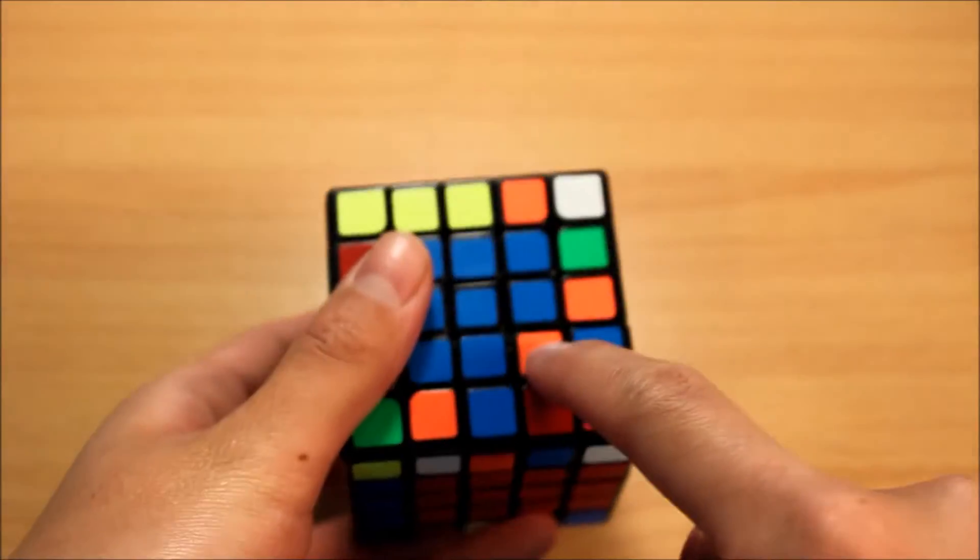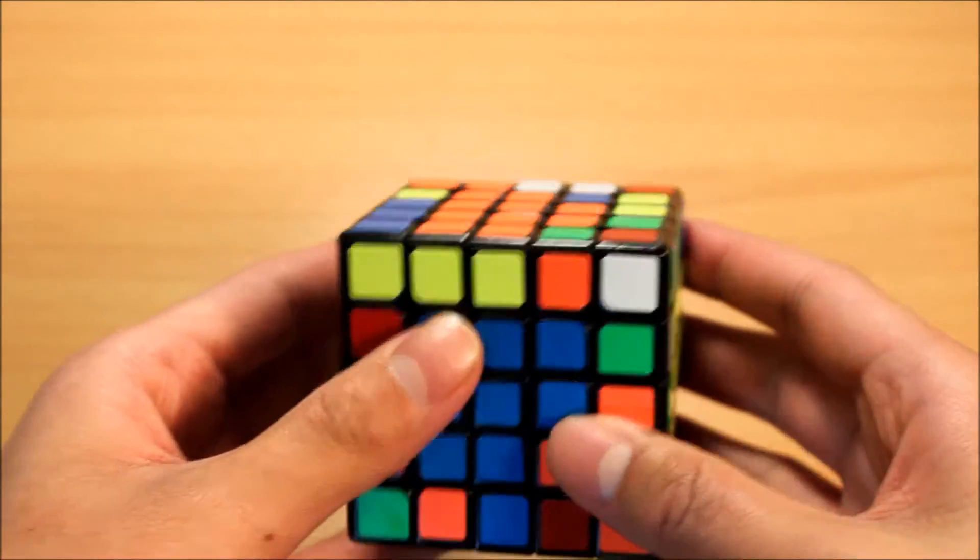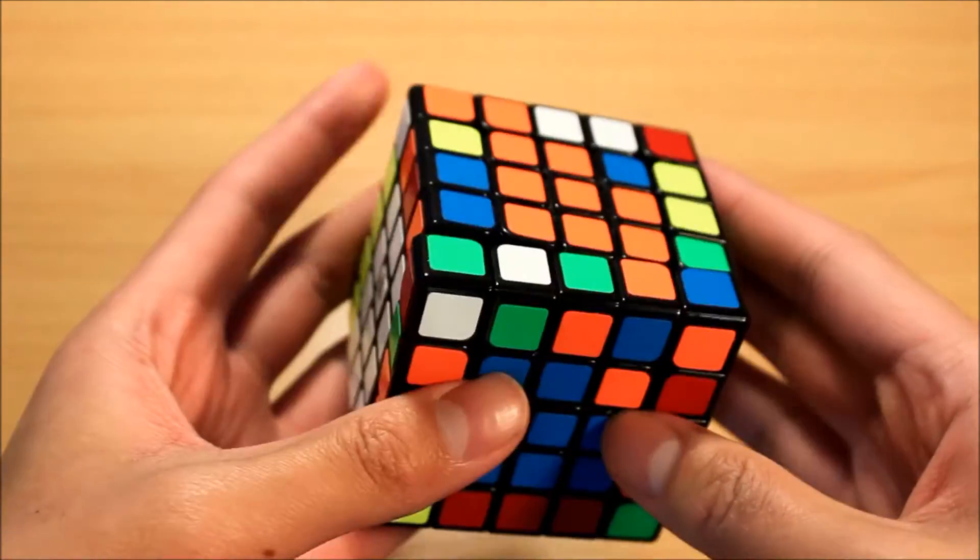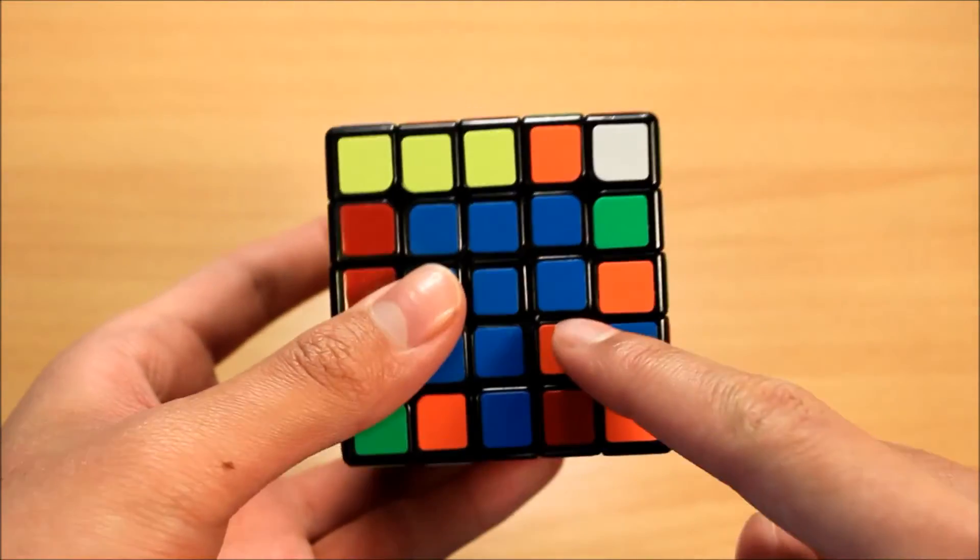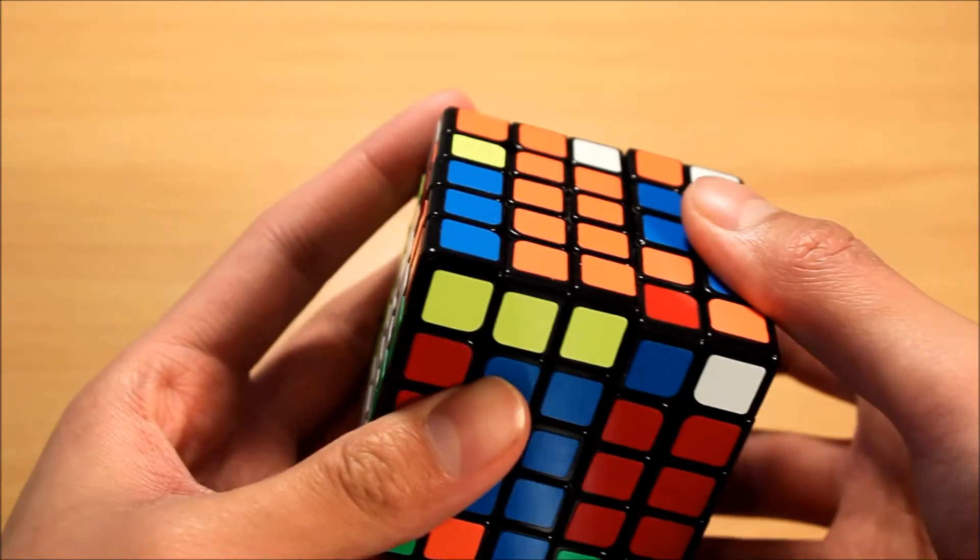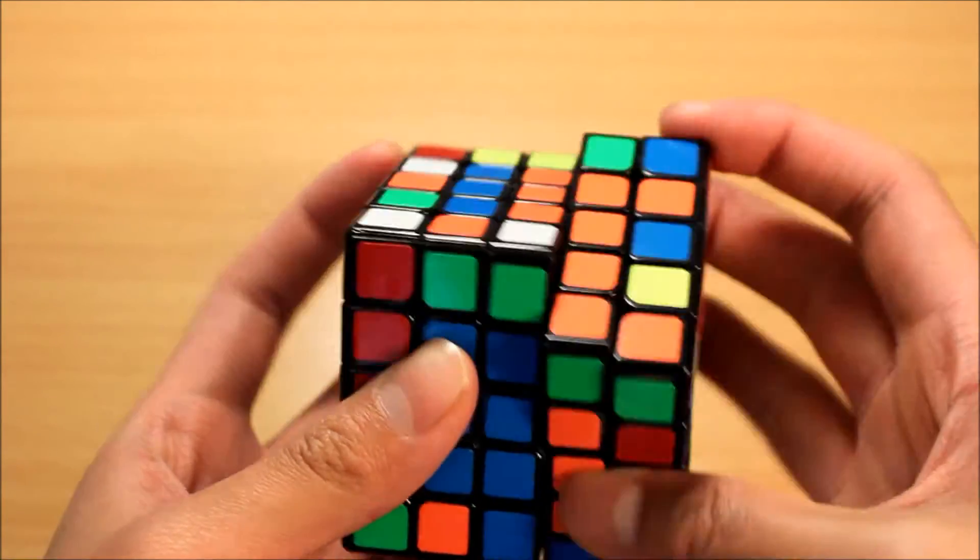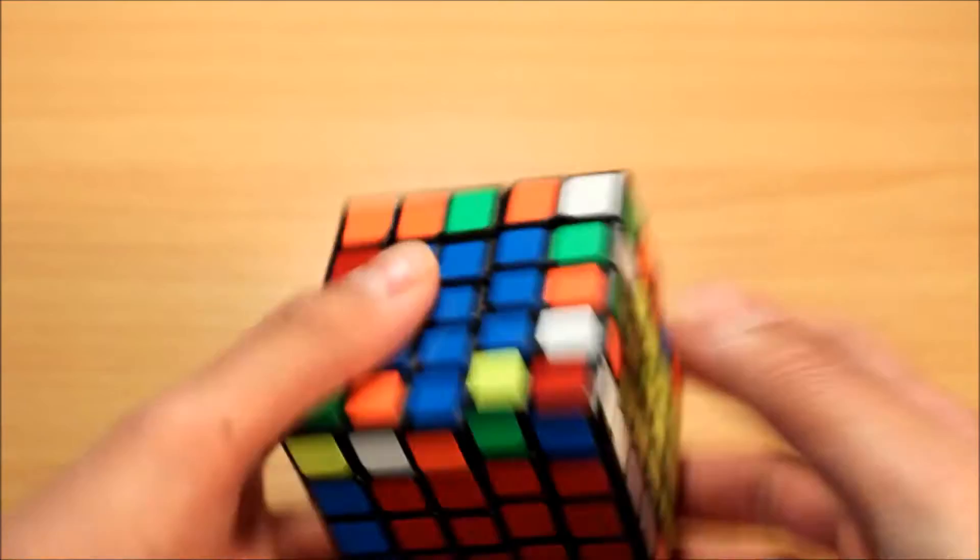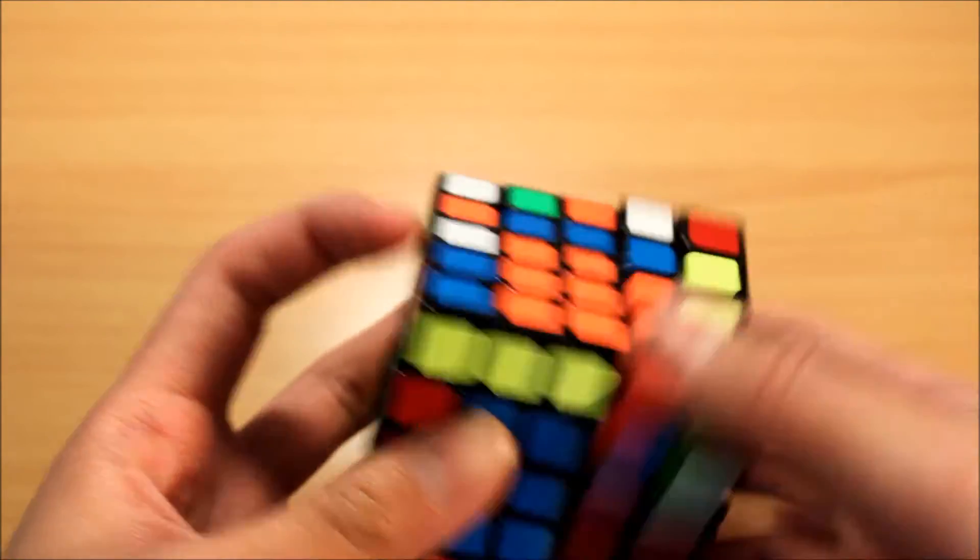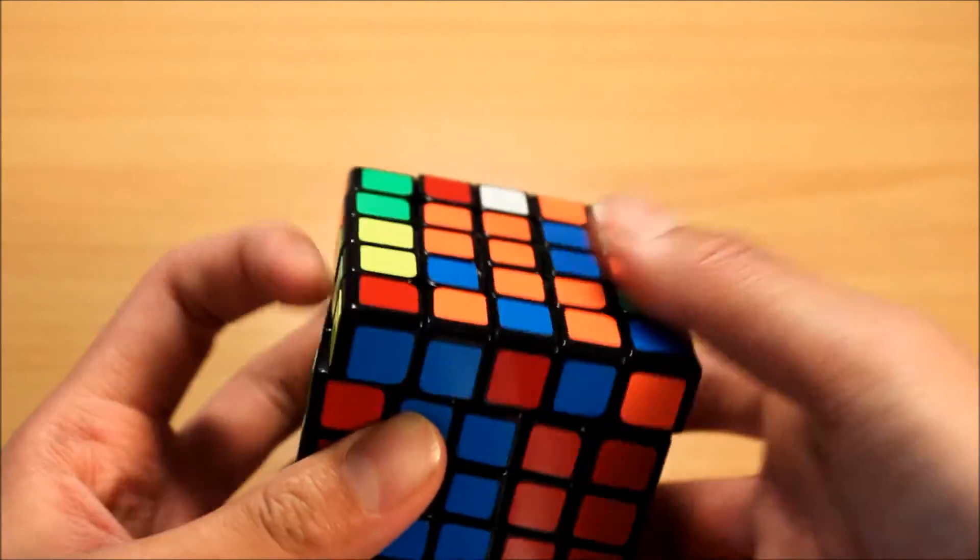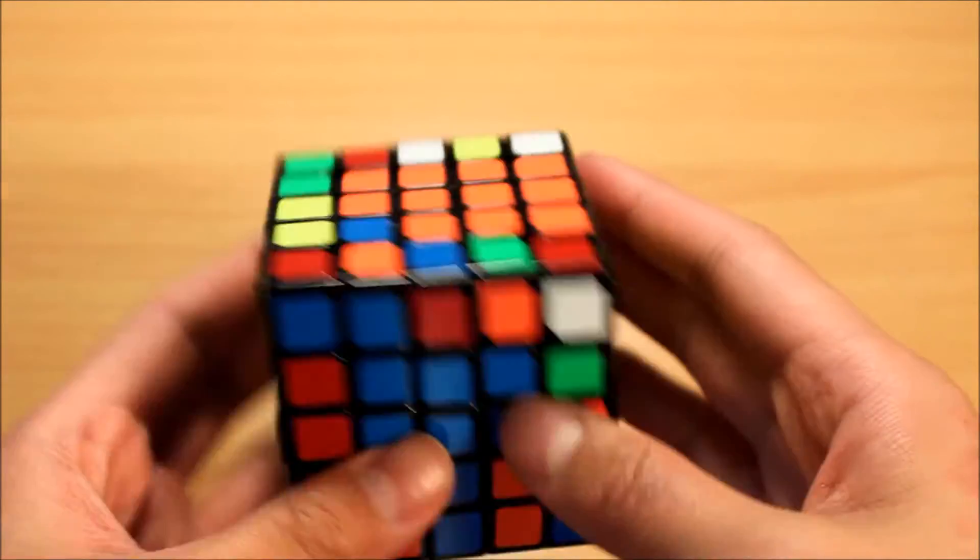When the corner's down here, however, you do something different. Instead of doing something like F and then U, that's pretty inefficient. For this case, we're going to just do this. Again. Pretty simple.